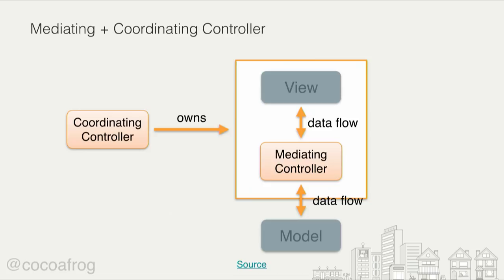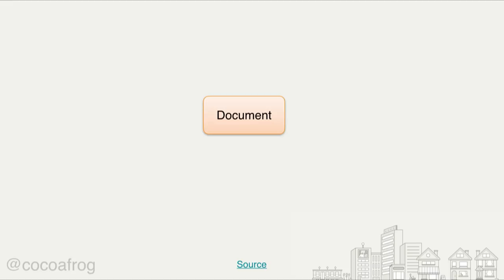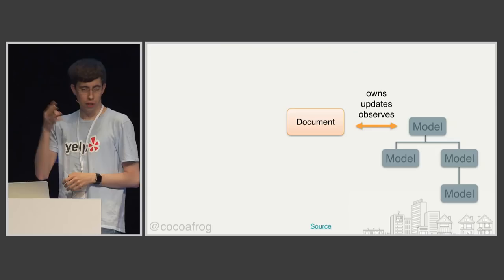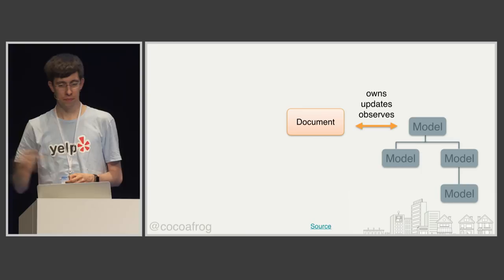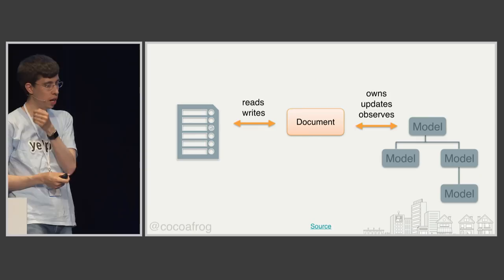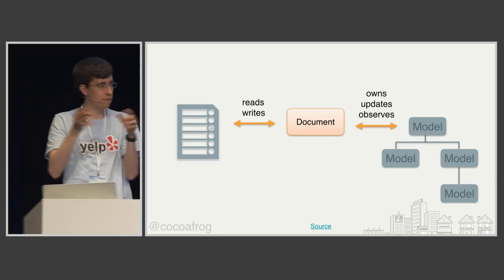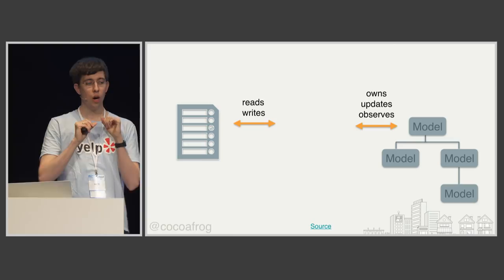Another example is NSDocument or UIDocument. Your document owns, updates, and observes the model, and has a second task: reading from the document file to create the model, and writing the model back to the file. You might think that means document is a model — but no, Apple says document is a model controller. When you think about it, it makes sense: if we have view controllers responsible for the view, we can have model controllers responsible for the model.